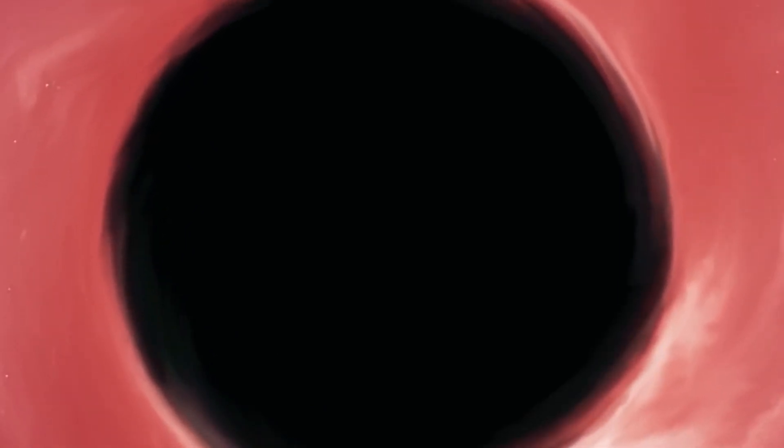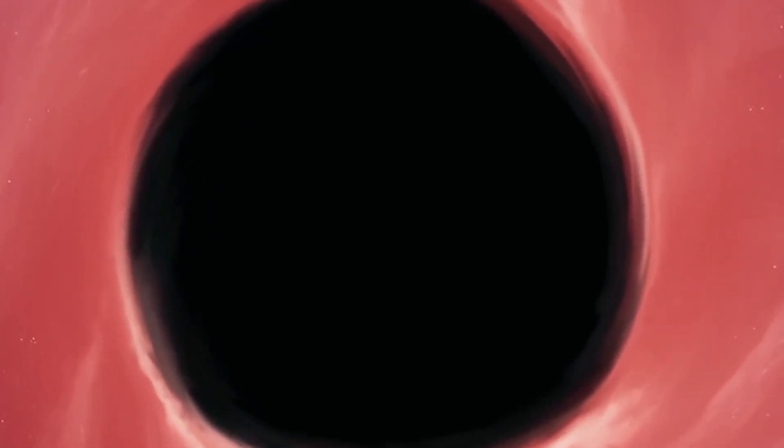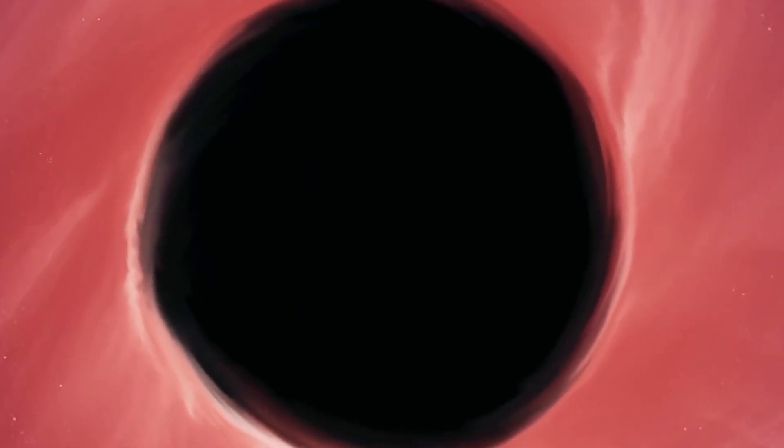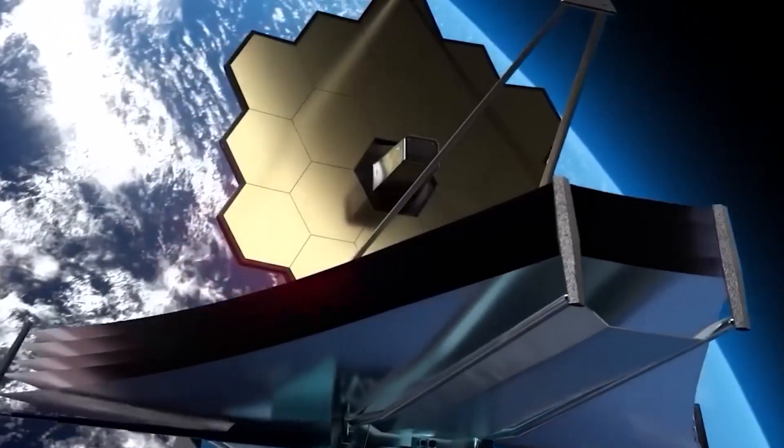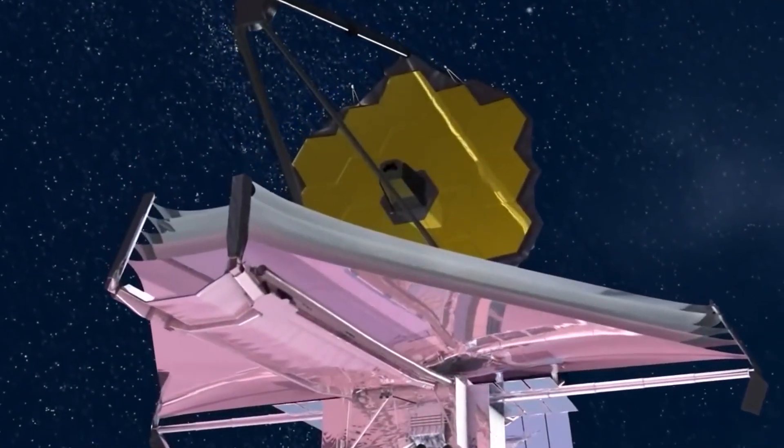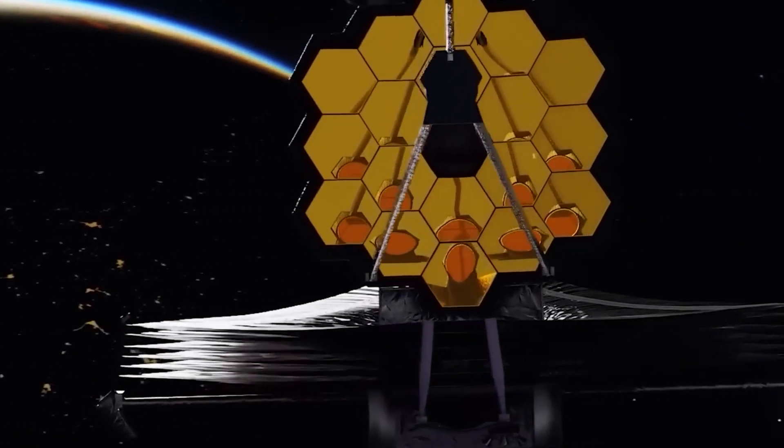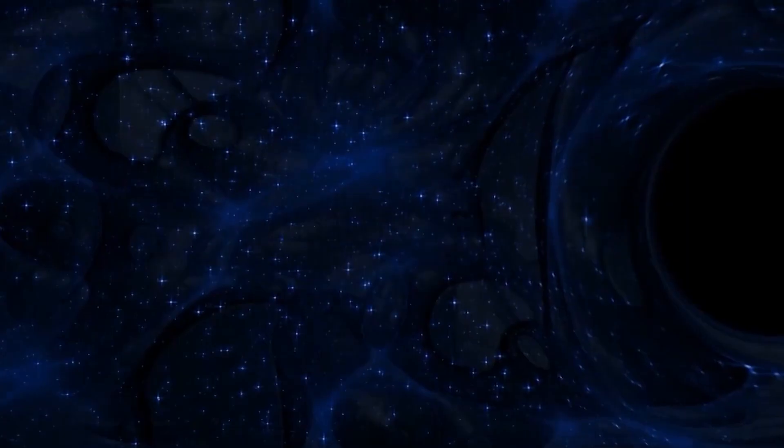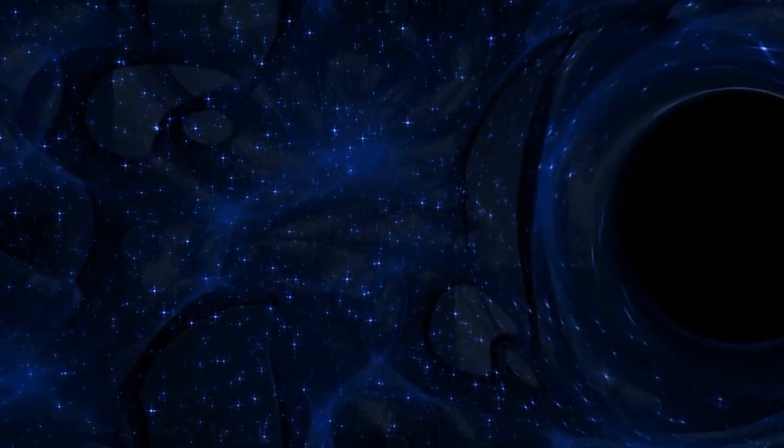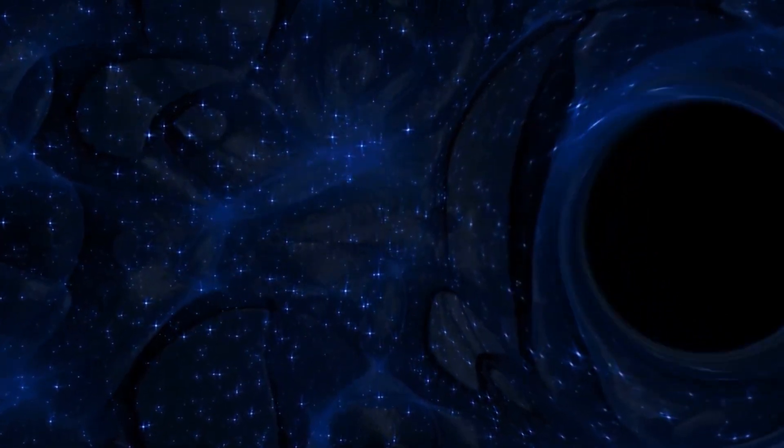Traditionally, astronomers could only observe the brightest black holes using ground-based and space telescopes, especially those relatively close to Earth. JWST, however, is uniquely designed to capture light from the distant universe, enabling it to spot black holes situated much farther away, including those previously considered too faint to detect.